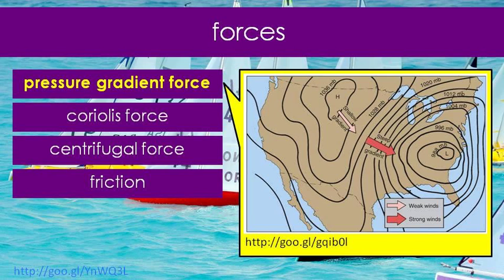The more contour lines there are, the faster we're changing pressure. So the closer those lines get together, the stronger that pressure gradient force is. Whereas if those contour lines are farther apart, the pressure gradient force is weaker, and we are accelerating the air less through the pressure gradient force.